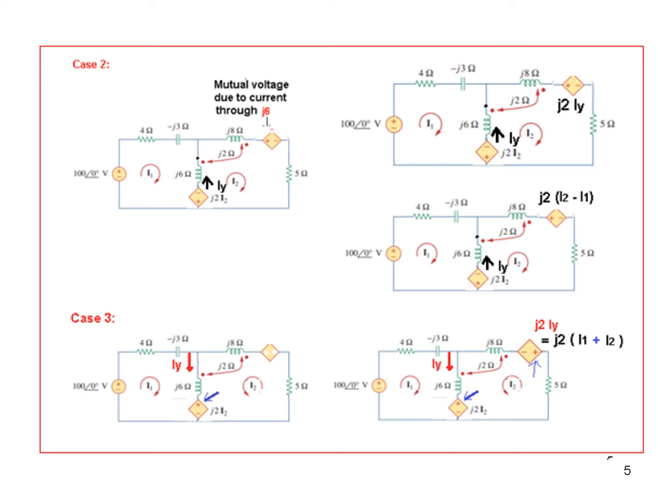First of all, this current I2 is the same, entering the non-dotted terminal. Therefore, the non-dotted end will be positive. So this will remain positive and there is no change in the magnitude J2 I2. So this portion will remain the same. What about here?